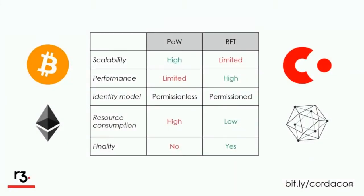If we compare proof of work and BFT in this table, we could say that BFT-based algorithms are superior because they provide finality, higher performance, and don't waste resources. But they effectively both solve different problems. Proof of work works great for public blockchains like Bitcoin or Ethereum, where the aim is to create a global, unregulated, secure currency. BFT works well for private or permissioned blockchains which try to optimize existing business workflows, where there are existing trust relationships and regulatory requirements.